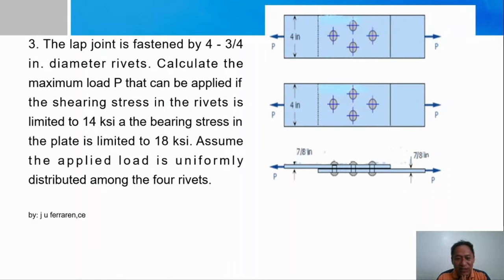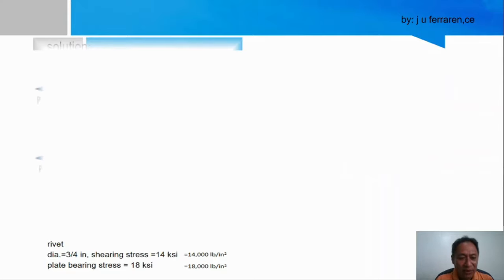Assume that the applied load is uniformly distributed among the four rivets. So for the solution, P here is the unknown. You are also given the thickness there, the width of the plate. They are expressed in terms of English units. Okay, for the solution.